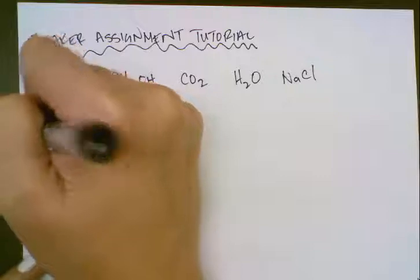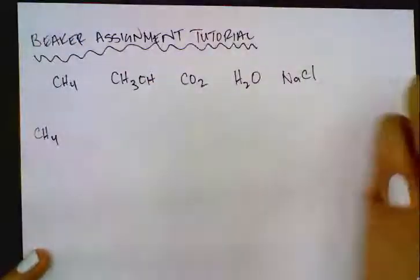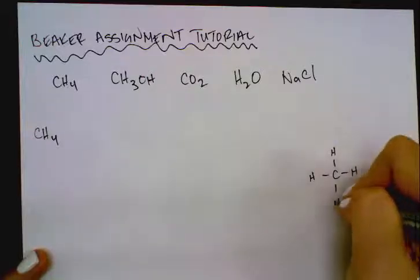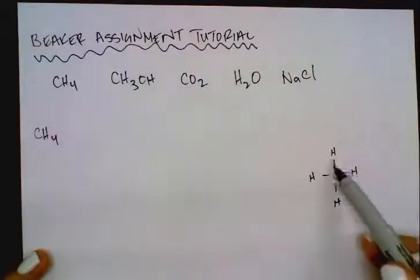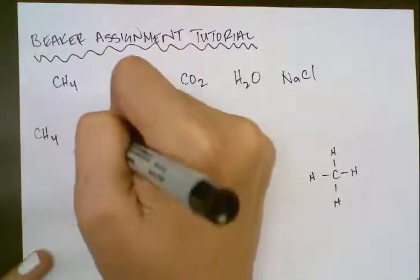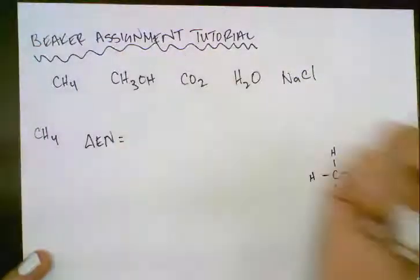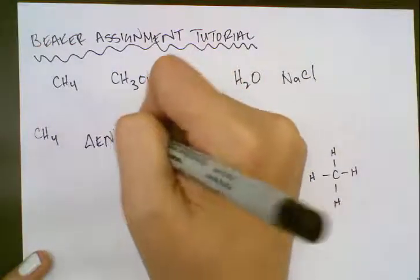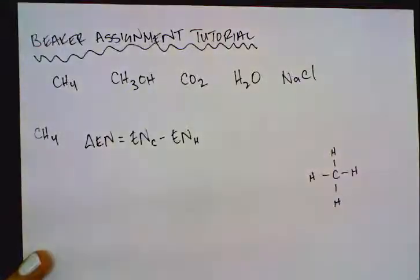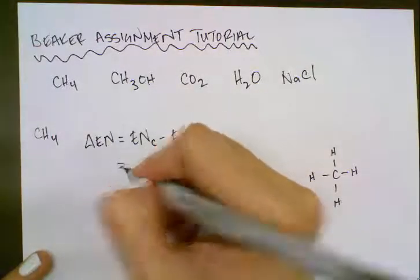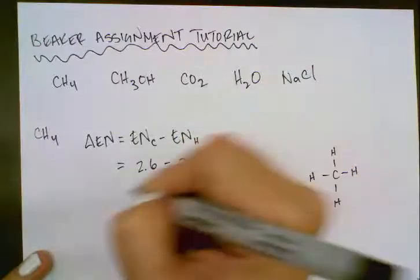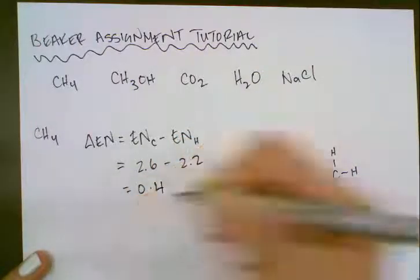So let's start with methane. If you draw your Lewis structure, looks like this, and we can see it's made only of carbon-hydrogen bonds. So that's the only bond type we have to figure out. So we're going to do our delta EN to figure out what type of bond it is. We're going to subtract the electronegativity of hydrogen from carbon, because carbon is the larger number. So it's going to be 2.6 minus 2.2, which works out to be 0.4.